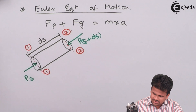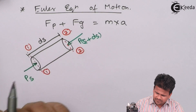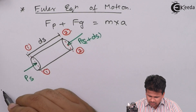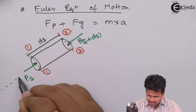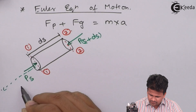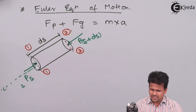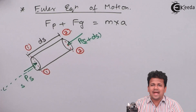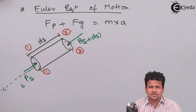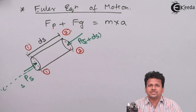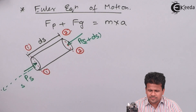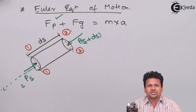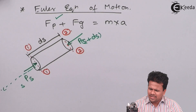Why is it S plus dS? Because we are assuming there is one origin somewhere, and from the origin the distance till section 1-1 is S. Hence the pressure there is P_S, the pressure at the inlet of the entire fluid. And this is the pressure at the outlet of the entire fluid. So we have considered what is the pressure force acting on the fluid.